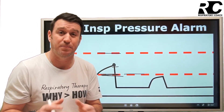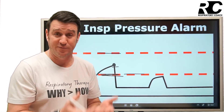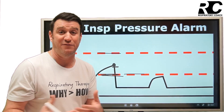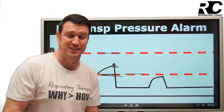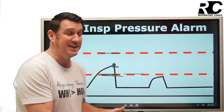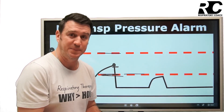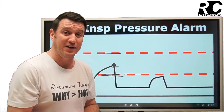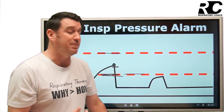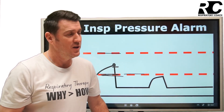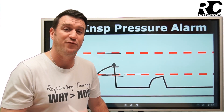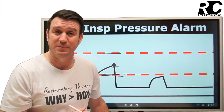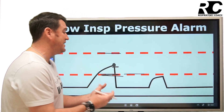You don't want the low inspiratory pressure alarm set too high, because small changes in pressure during volume control ventilation can cause fluctuations. It can't be set too close to your actual peak inspiratory pressure. Some say 5 cmH2O below, some say 10 cmH2O below your actual steady and stable peak inspiratory pressure. But it has to make sense for each patient — if a patient's PIP is 14 cmH2O, you'd probably set the alarm around 8 or 9 cmH2O rather than 4.